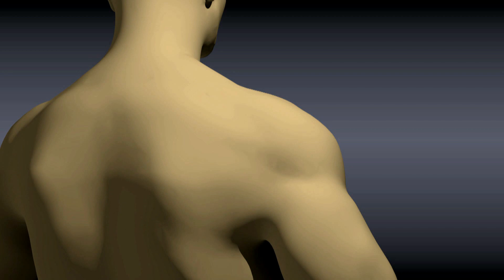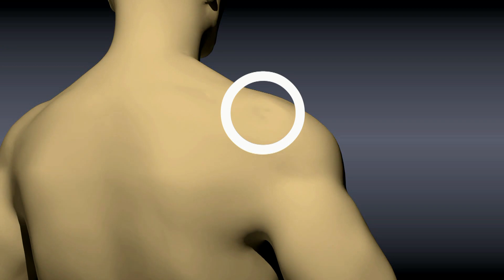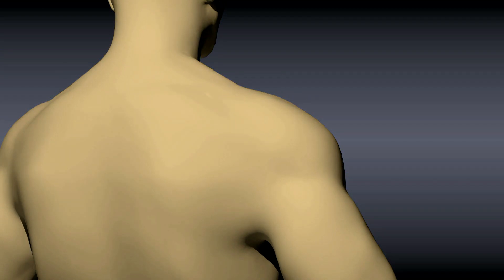The acromion can be felt by pressing on the shoulder. The space just below the acromion is felt and marked. This will be the injection site.